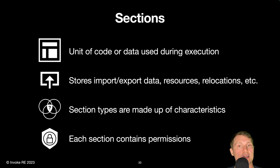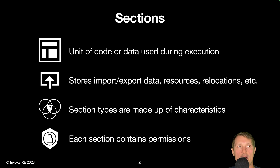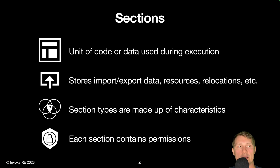Sections are units of code or data which are loaded at runtime in order to execute a given program. The sections contain all required information for a program to run. In addition to code, sections store import and export data, resources, uninitialized data, initialized data, and relocation information. The section type is made up of characteristics flags stored within an enum. Each section contains permissions which distinguish whether a section is readable, writable, or executable. These permissions are set at runtime by the loader and typically differ based on the section's role within the program.